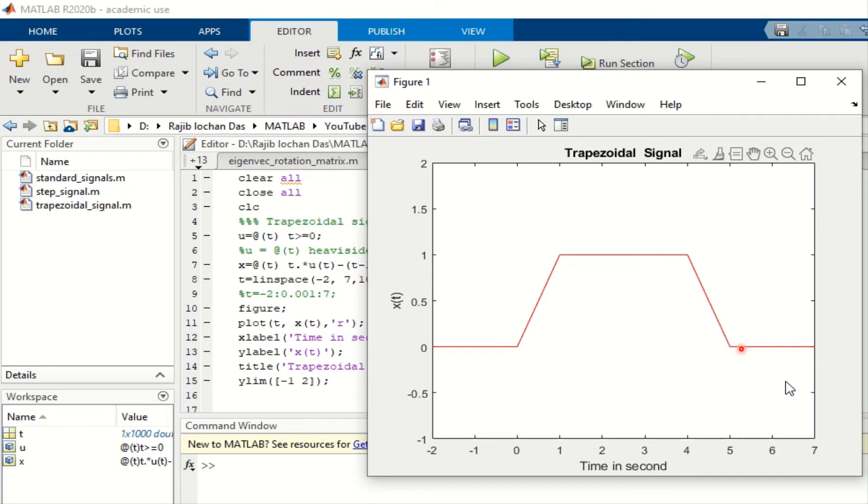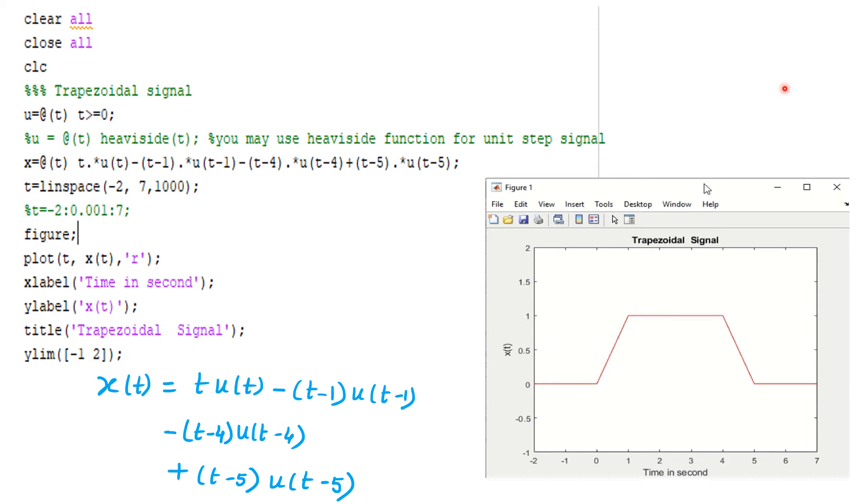Now I will discuss the code. So our target is to implement this signal x(t) = t·u(t) - (t-1)·u(t-1) - (t-4)·u(t-4) + (t-5)·u(t-5).